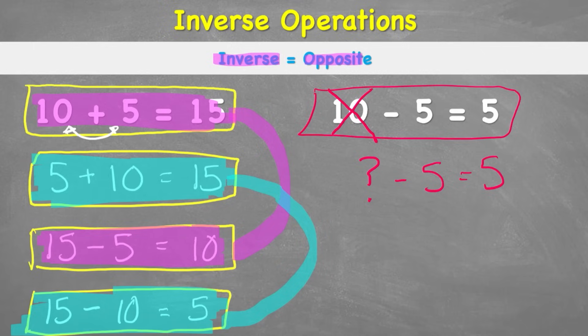We can just use the inverse operation. At the minute, I have subtraction. So now I'm going to use the inverse, which is addition, and just go backwards, starting with my 5. So I have 5. And the inverse is addition. 5 plus 5 equals question mark. And 5 plus 5 equals 10. So I can write my final number sentence: 5 plus 5 equals 10.